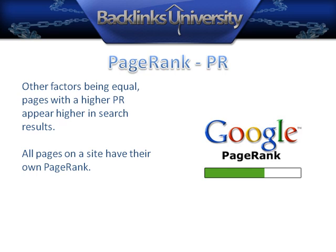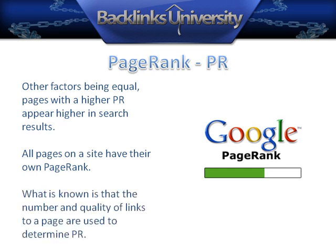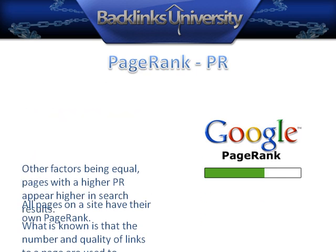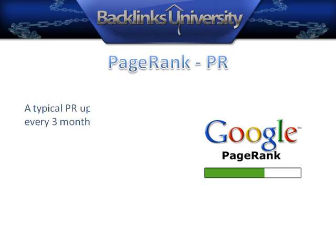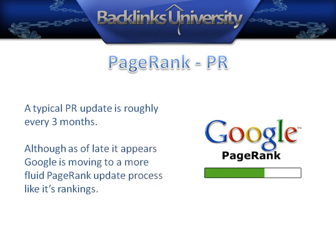All pages on a site have their own PageRank. What is known is that the number of links and quality of links to a page are used to determine PR. A typical PR update is roughly every 3 months, although as of late Google appears to be moving towards a more fluid PageRank update process like its rankings.